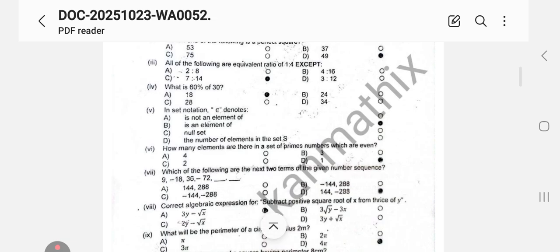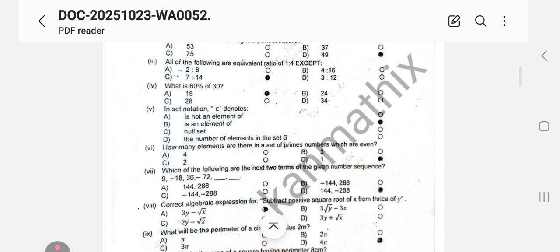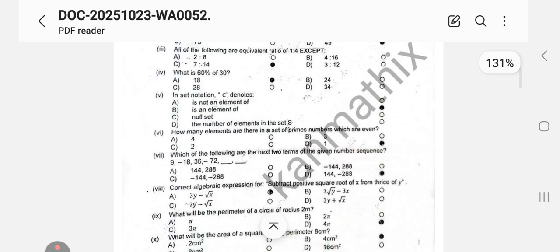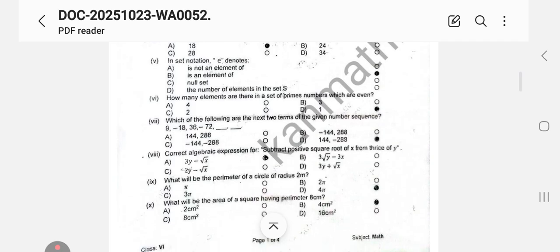All of the following are equivalent ratios of 1:4 except - you can see that 2:8, when you write in fraction, it will be 2 by 8 equals 1 by 4. 4:16, when you simplify, it also gives you 1 by 4. Then 3:12, 3 times 1 is 3, 4 times 3 is 12, it also gives you 1:4. Only option 7:14 is not giving you 1:4, it's giving you 1:2. So option C is correct. What is 60 percent of 30? You have to calculate 60 by 100 multiply by 30, it will give you 18. This symbol denotes 'is an element of,' B option is correct. How many elements are there in the set of prime numbers which are even? You can see only even prime is 2, so only one element - 2 is the only even prime.